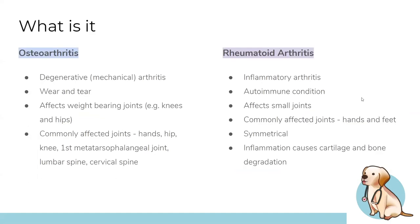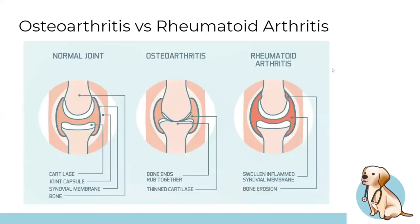Osteoarthritis is mechanical and mainly affects weight-bearing joints — knees, hips, first metatarsophalangeal joint, lumbar and cervical spine. Rheumatoid arthritis is autoimmune and mainly affects small joints of the hands and feet, and tends to be symmetrical. Rheumatoid arthritis also causes inflammation leading to cartilage and bone degradation. Morning stiffness lasting less than 30 minutes suggests osteo; more than 30 minutes suggests rheumatoid.